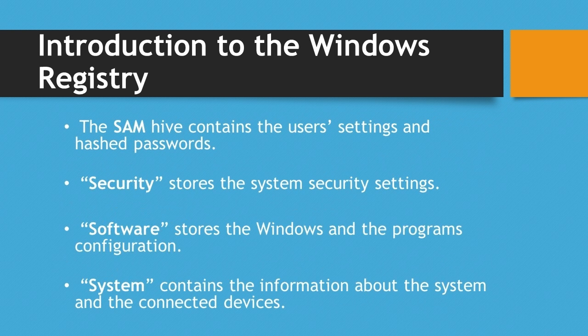The SAM hive contains information about local system users and groups, including their passwords stored in a hashed format. The Security hive stores system security settings such as account audit, user rights, and application control policies. The Software hive stores the Windows configuration as well as installed programs. Finally, the System hive contains settings of the system and the devices that are currently or have previously been attached to the computer.